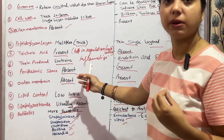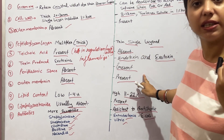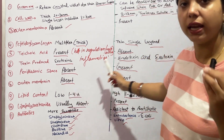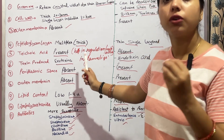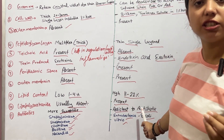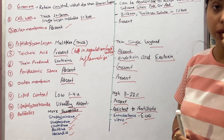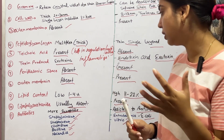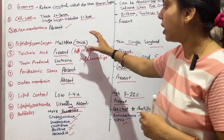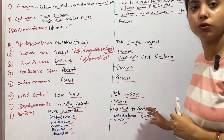Now let's talk about the periplasmic space. The periplasmic space is absent in gram positive bacteria and present in gram negative bacteria. Regarding antibiotics, gram positive bacteria are generally more susceptible to antibiotics compared to gram negative bacteria.